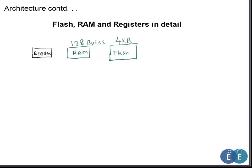RAM is used for temporary access — it fetches the code from flash and stores temporary data generated during processing. The flash is used to store the code that we write for the microcontroller. Now let us look at the flash memory in detail.